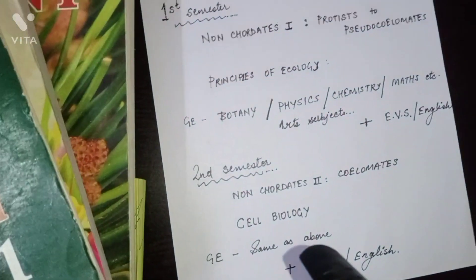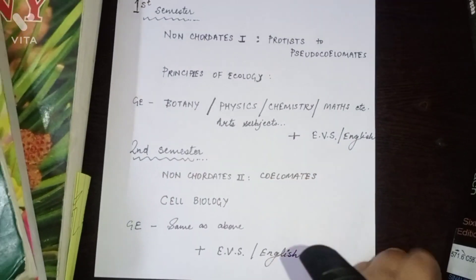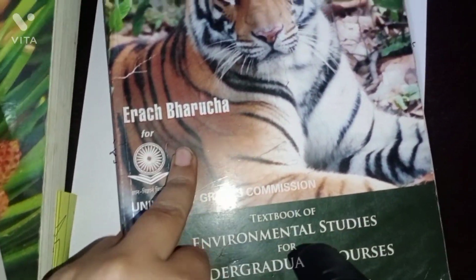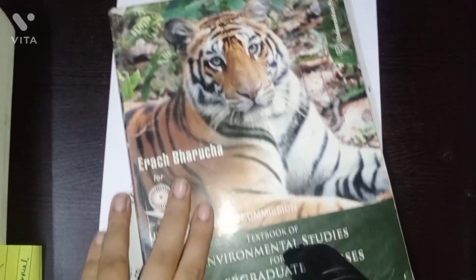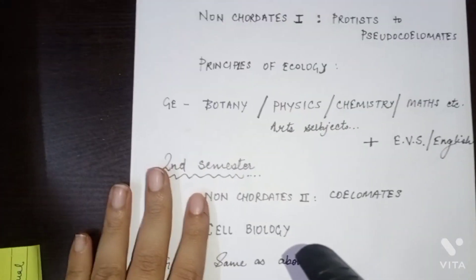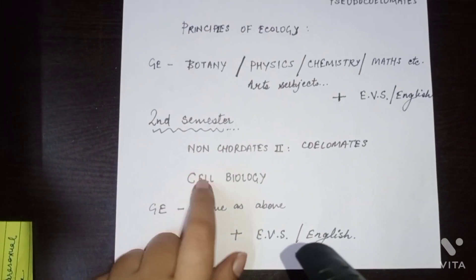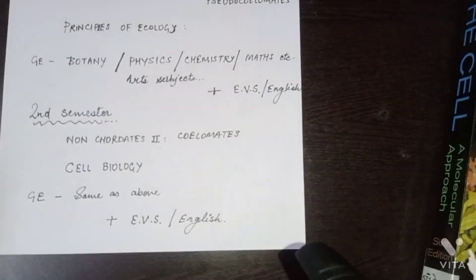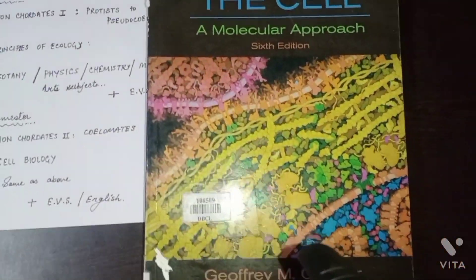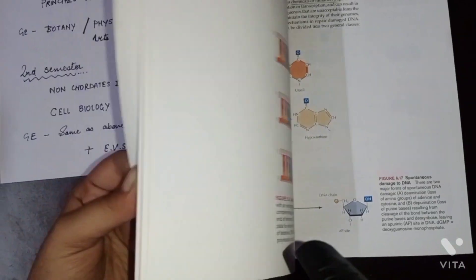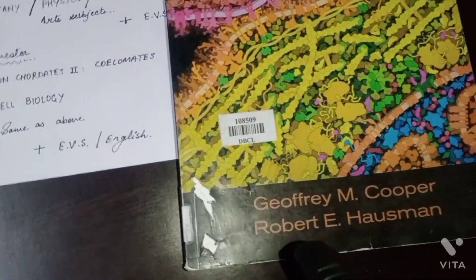For EVS, I took this book — Iraq Barucha. Iraq Barucha is one of the best books for EVS, as told by our professor. And for Cell Biology in the second semester, Cooper and Karp — these two books are recommended. I have Cooper, so Cell Biology can be studied from this book.